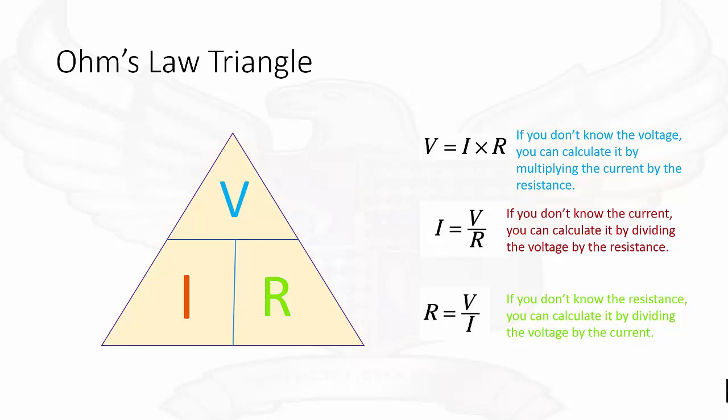If you would like to work out the voltage, that's current times resistance. If you'd like to work out current, that's voltage divided by resistance. And if you'd like to work out resistance, that's voltage divided by current.